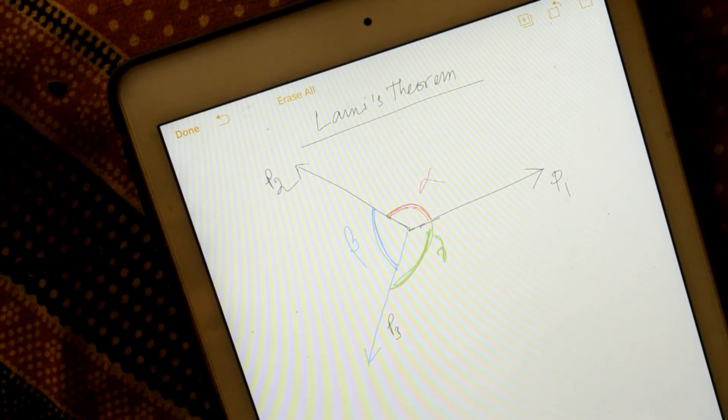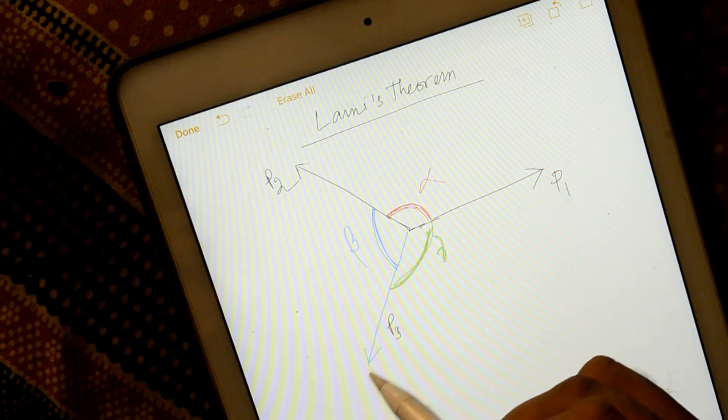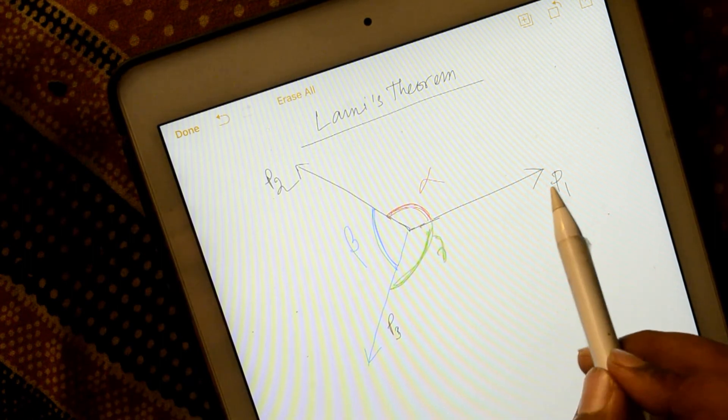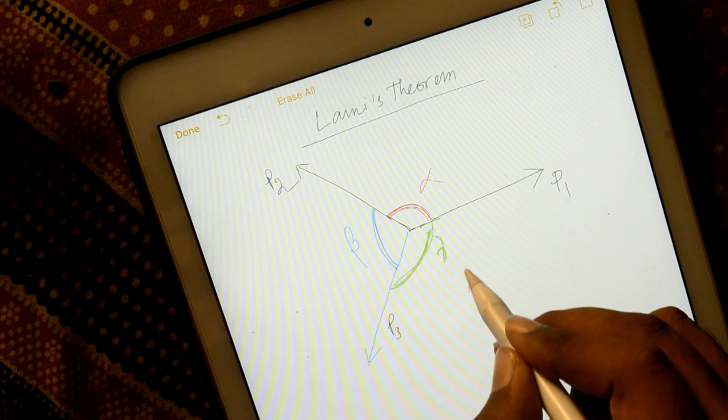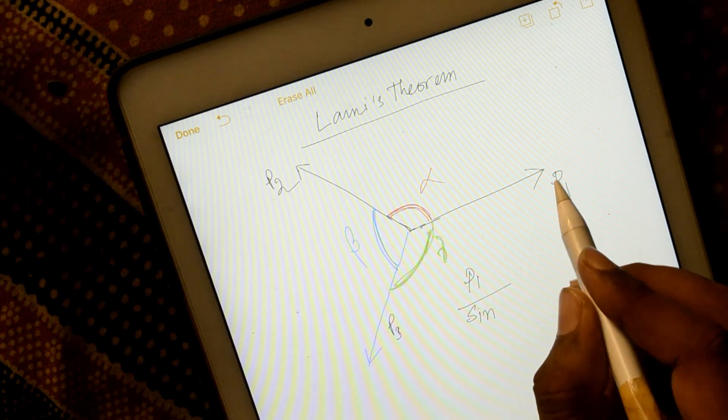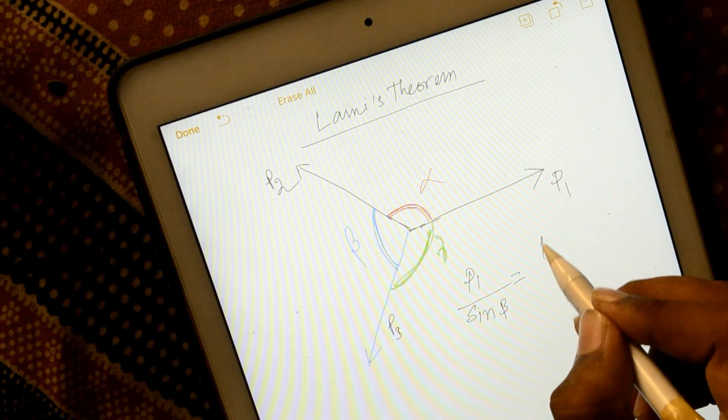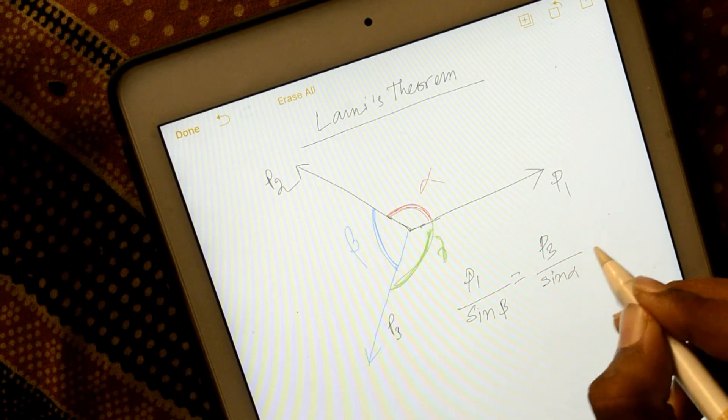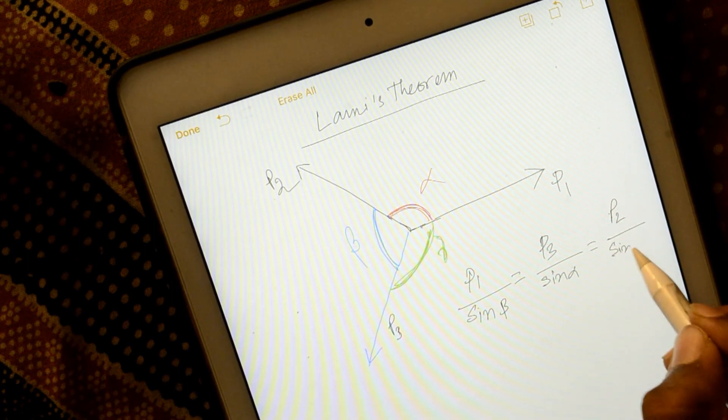In Lamy's theorem, Lamy says that length or value of this vector by opposite direction sine of opposite angle equal to force by opposite angle of sine. That means P1 by sine, this is the P1, what is the opposite direction? Sine of beta. Equal to P3. What is P3 opposite? Sine alpha. Equal to P2 opposite. Sine gamma.